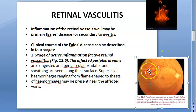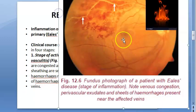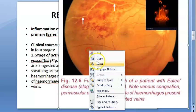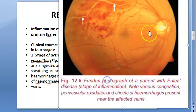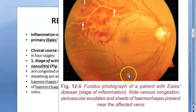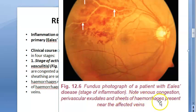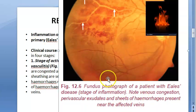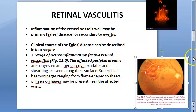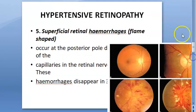In a fundus photograph of a patient with Eales disease from Khurana, you can see flame-shaped hemorrhage. In retinal vasculitis, instead of discrete flame shapes, you can also see sheets of hemorrhage. So both flame-shaped and sheet hemorrhages can be present in retinal vasculitis.